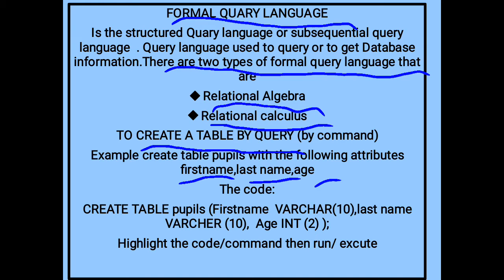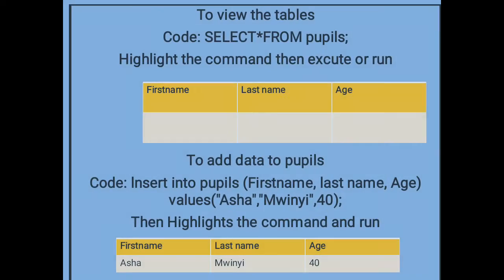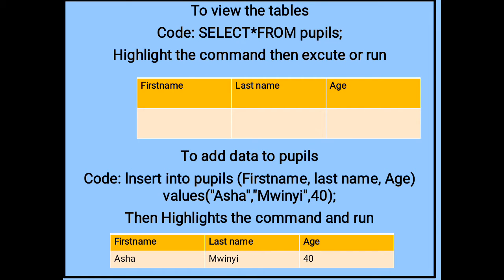The code used to create a table called 'pupils' is as follows: CREATE TABLE pupils with brackets containing first name — where VARCHAR means the character for the first name is supposed to be 10 — last name VARCHAR(10), and age INT(2). Then highlight the code or command and execute to get the output.